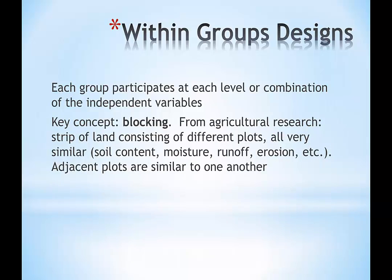The key concept here is called blocking—a term that comes from agricultural research. You can imagine an agricultural researcher using a strip of contiguous land where the characteristics are very similar: the amount of sunlight, erosion factors, runoff, moisture, and nutrients in the soil. Adjacent plots in a strip of agricultural land are similar to one another. We're going to take that analogy and carry it forward to human beings, trying to block on variables that describe very similar groups of people.